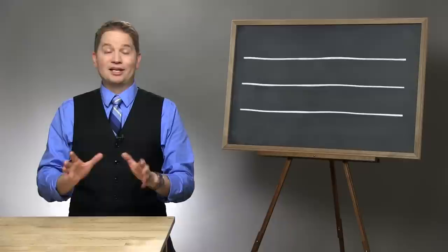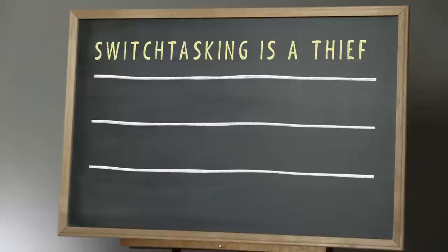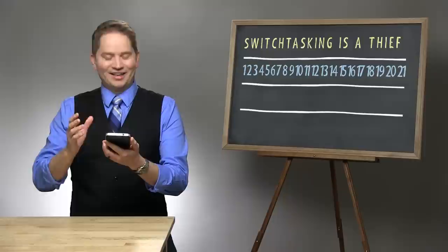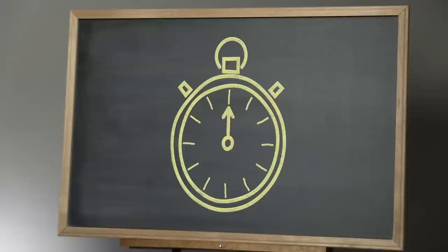What we're going to do is a timed exercise, so don't start until I say go. You're going to re-copy in the first row the phrase 'switch tasking is a thief.' And then in the second row, you're just going to write the numbers one through twenty-one. So, get your paper and your pencil ready, get set, and go.